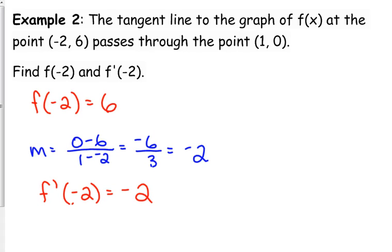That's all there is to that problem. They give you f of negative 2, you just have to recognize that they give it to you. And then f prime of negative 2 is the derivative of the function at negative 2, which means it's the slope of the tangent line at negative 2. They give us two points on the tangent line, so we find the slope through those two points. That is the value of the derivative.